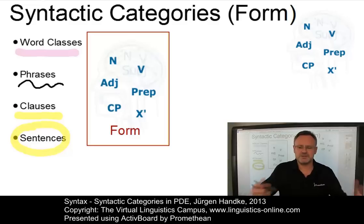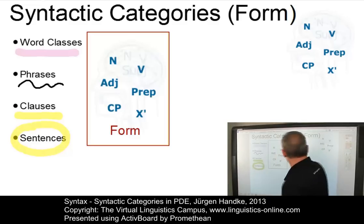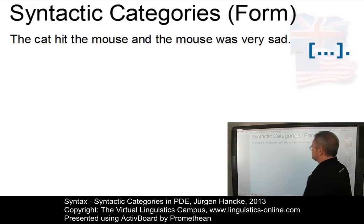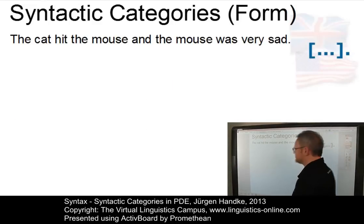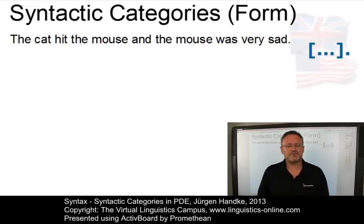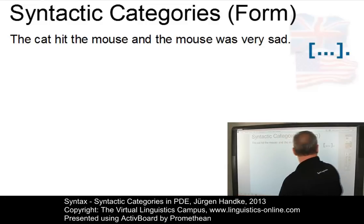Let us illustrate this formal analysis on the basis of an example first. Here is a sentence: The cat hit the mouse and the mouse was very sad. Let us now perform a formal analysis from word classes to the sentence itself.